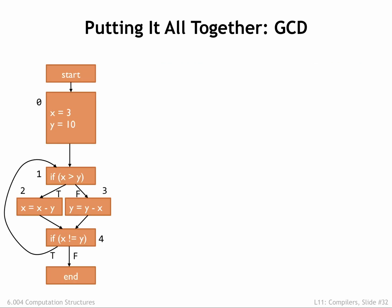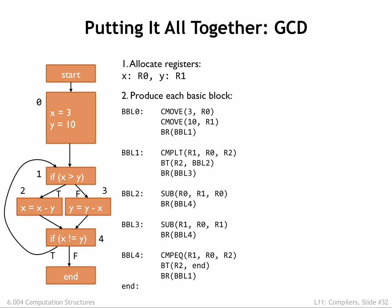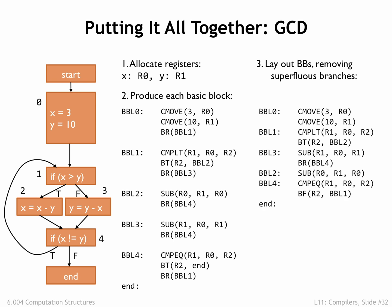Here's how the code generator will process the optimized control flow graph. First, it dedicates registers to hold the values for X and Y. Then it emits the code for each of the basic blocks. Next, reorganize the order of the basic blocks to eliminate unconditional branches wherever possible. The resulting code is pretty good. There are no obvious changes that a human programmer might make to make the code faster or smaller. Good job, compiler!